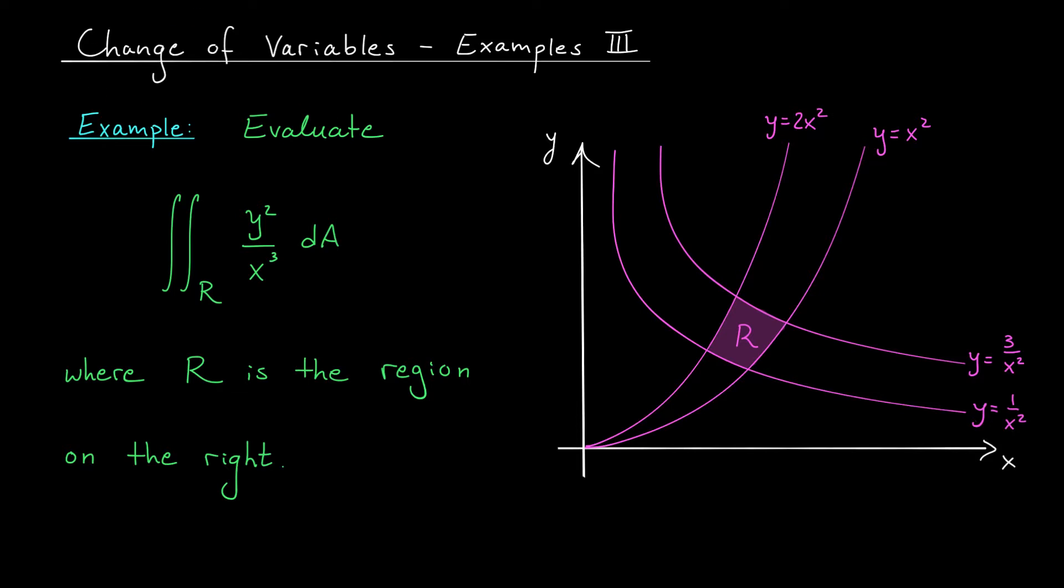It shows that sometimes the process of transforming an integral with the change of variables formula can be a little bit more involved than what you've seen in the last couple examples, particularly when you're dealing with some more complicated curves in R2. In this example, we are trying to evaluate the double integral over R of the function y squared over x cubed, where R is this region on the right.